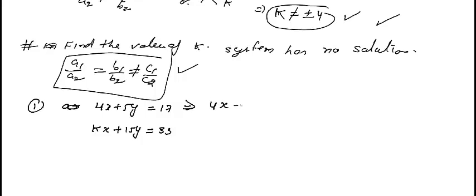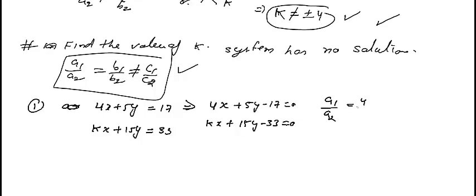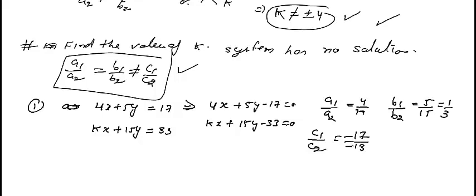Writing in standard form: 4X plus 5Y minus 17 equals 0, and KX plus 15Y minus 33 equals 0. Now A1/A2 equals 4 over K. B1/B2 equals 5 over 15, which simplifies to 1 by 3. C1/C2 equals minus 17 over minus 33, which is 17 over 33 since the negatives cancel.